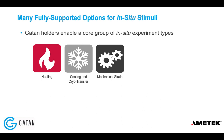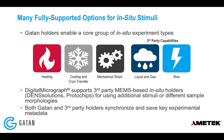The Gatan ecosystem has many fully supported holder options for in-situ stimuli. For experiments requiring heating, cooling, cryo-transfer capabilities, or mechanical straining, you can consider Gatan's own core TEM holders. However, many microscopists interested in catalysis or energy materials may require liquid or gas environments or an applied bias, for which you'll need a third-party TEM sample holder. Whether you have a Gatan or third-party holder, Digital Micrograph will save key experimental metadata — such as current holder temperature — and synchronize it with the in-situ data as it is collected.